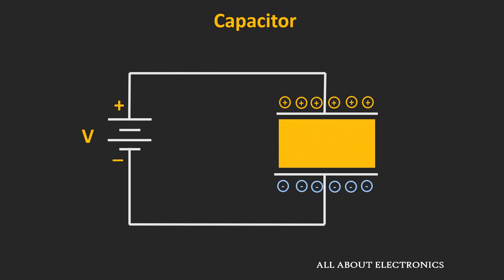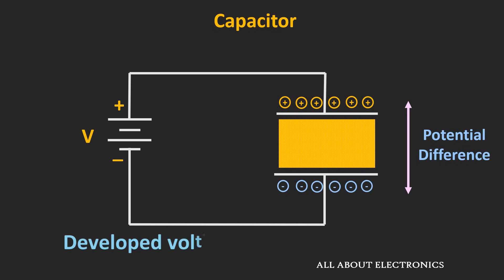Over time, the top plate will have a shortage of electrons while the bottom plate will have excessive electrons. We can say that the top plate gets positively charged while the bottom plate gets negatively charged. Because of these charged particles, a potential difference develops across the two plates. The buildup of charges continues until the potential difference across the two plates equals the supplied voltage.